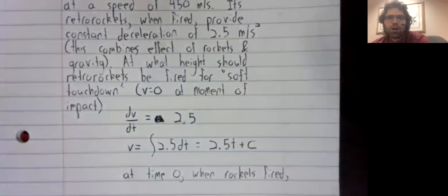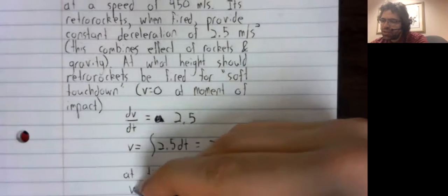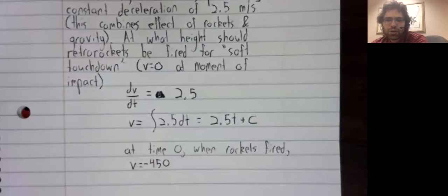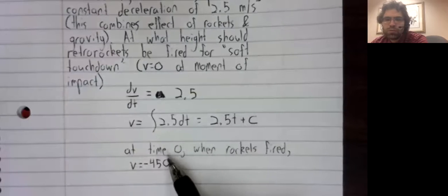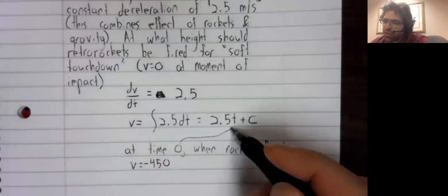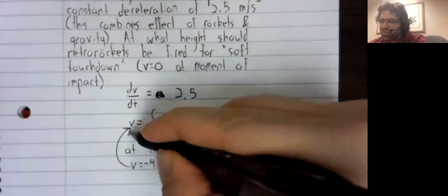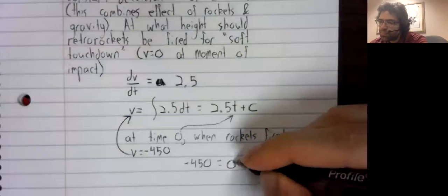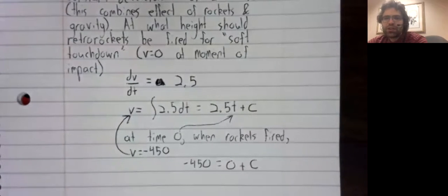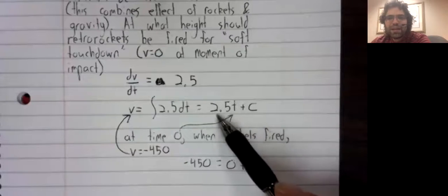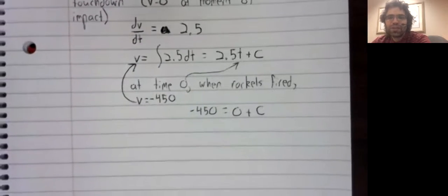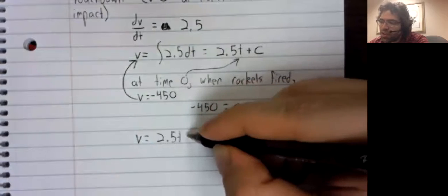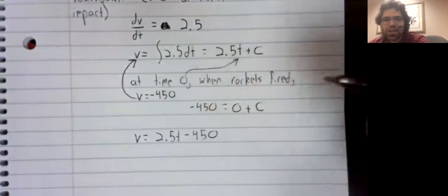Well, we've got a constant speed of 450 and a constant velocity of negative 450. So this is an initial condition. When time is zero, velocity is negative 450. And putting those together, we now go from an infinite class of velocity functions to the single velocity function we actually want.